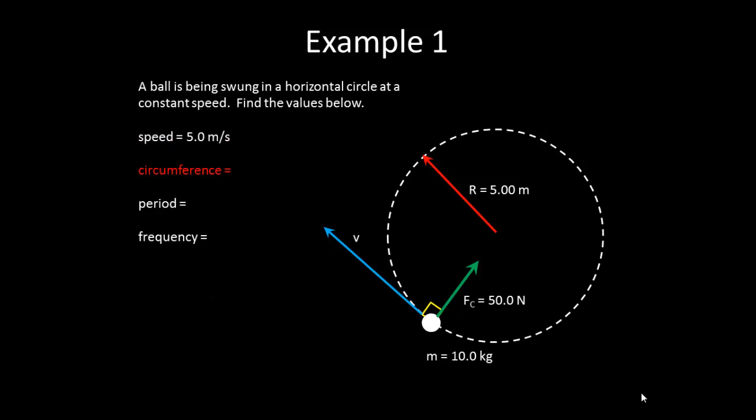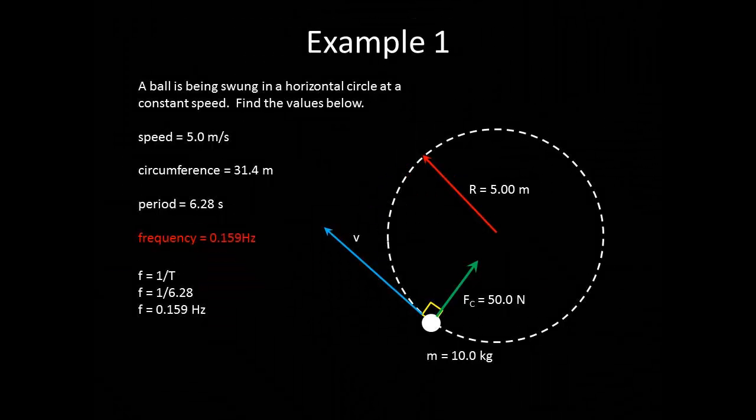Let's now find the circumference. The circumference is 2π times the radius. So, 2π times 5 gives us 31.4 meters. The period is found by taking the time divided by the cycle. So, we want the total time to complete one cycle. And this is going to be equal to the distance traveled over the speed. The distance traveled to complete one cycle is just the circumference. And then we divide by the speed and we get 6.28 seconds. To then find the frequency, we will just take the reciprocal of the period. So, we get 0.159 hertz.